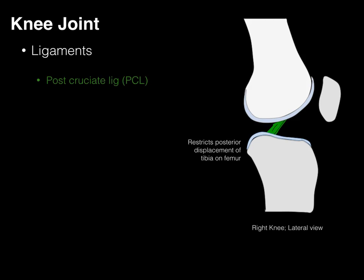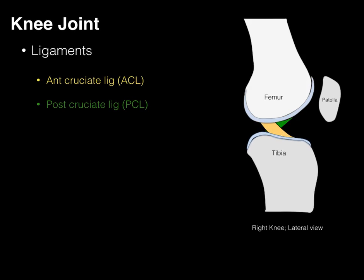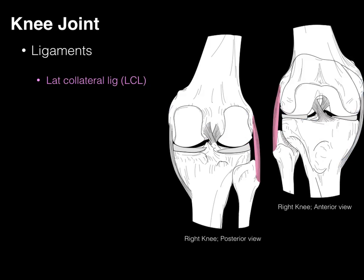In contrast, the PCL restricts posterior displacement of the tibia on the femur. When the tibia wants to move back, the PCL helps restrict that movement. So the anterior and posterior cruciate ligaments help restrict anterior and posterior translation of the tibia on the femur.